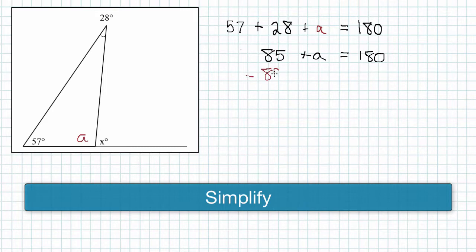We'll subtract 85 from both sides, and that will give us the measure of angle A, which is 95 degrees.